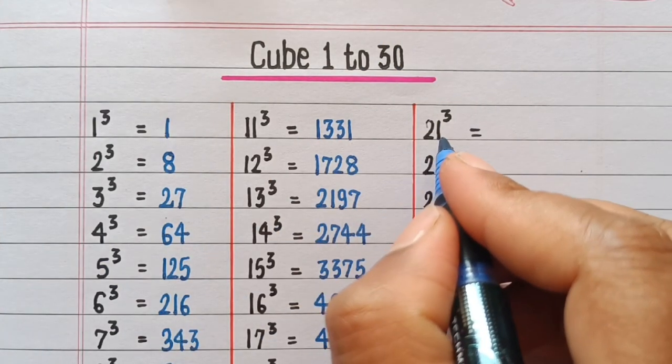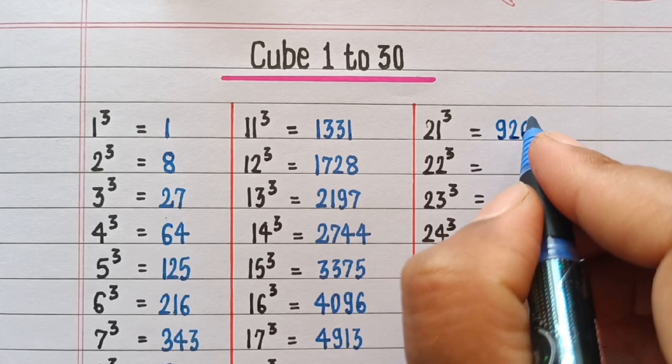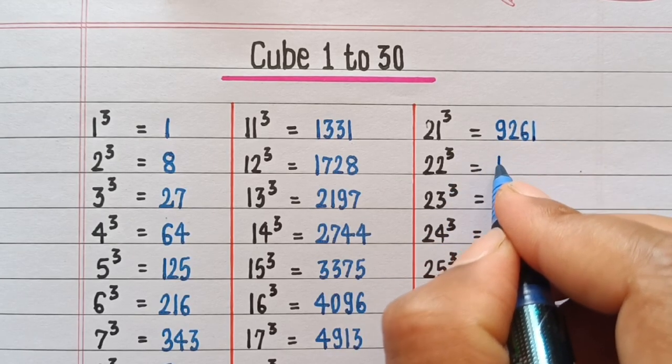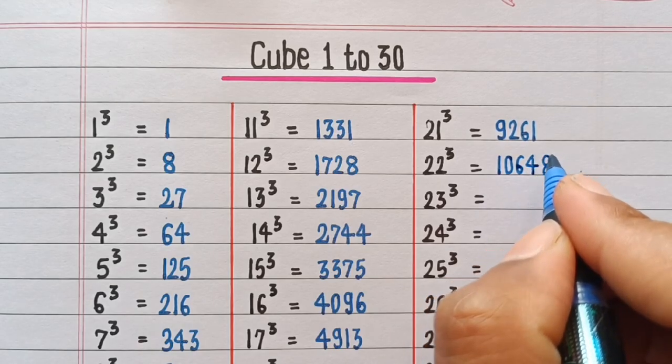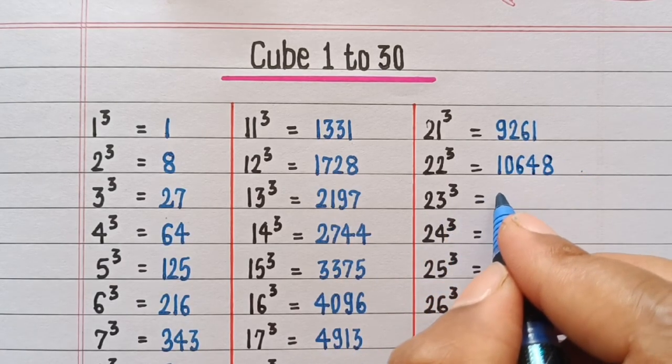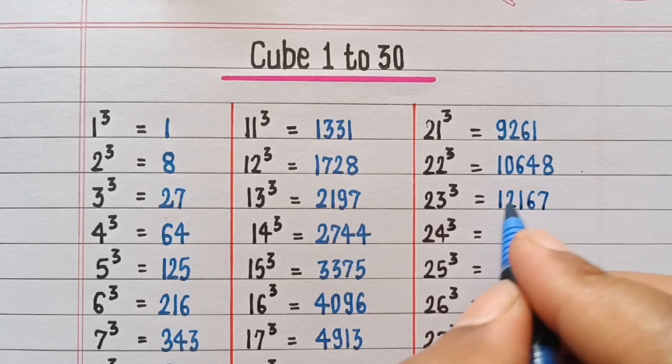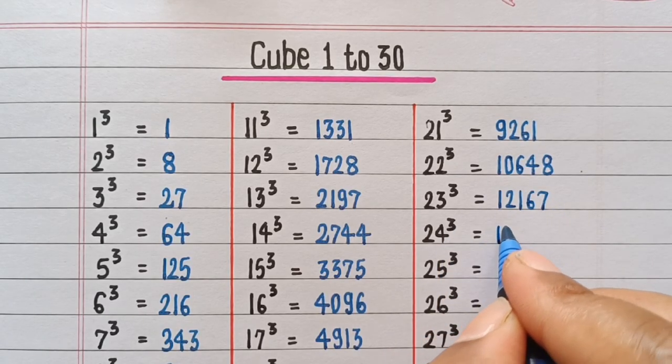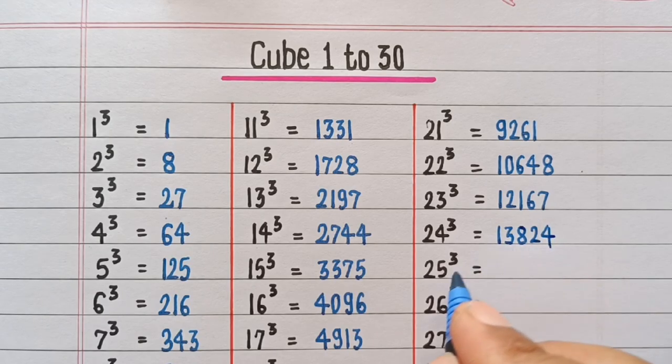Cube of 21 is 9261. Cube of 22 is 10648. Cube of 23 is 12167. Cube of 24 is 133824.